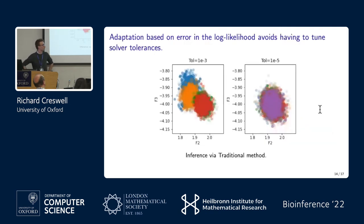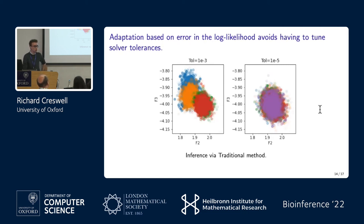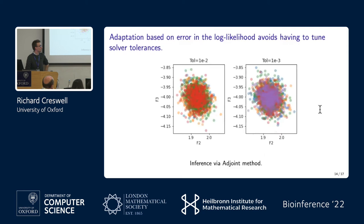The first result looks at the dependence of these methods on the tolerance, using the last half of 10,000 MCMC samples. For the traditional method at tolerance 10 to the minus 3, you start to see problems: the five different chains are not converging to the same posterior distribution — not terrible, but not hitting the true posterior. At tolerance 10 to the minus 5, the method works. For the adjoint method, the tolerance applies directly on the log likelihood, which greatly simplifies things. Setting 10 to the minus 2 on the log likelihood works fine, and would work for any tolerance up to 10 to the minus 2.